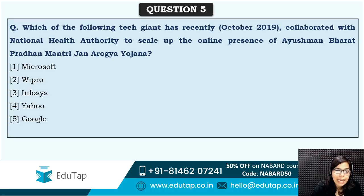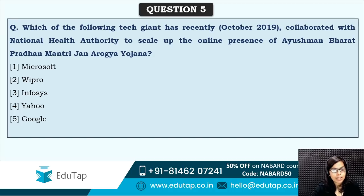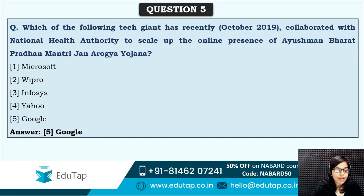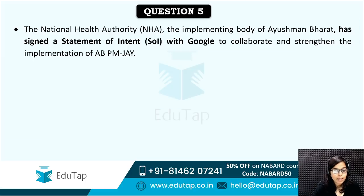Next: which of the following tech companies has recently collaborated with the National Health Authority to scale up the online presence of Ayushman Bharat Pradhan Mantri Jan Arogya Yojana? Is it Microsoft, Google, or Infosys? The correct answer is option five — Google has collaborated with the National Health Authority so that Ayushman Bharat's online presence can be increased.